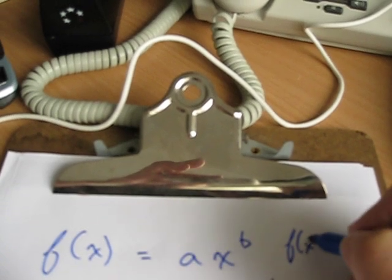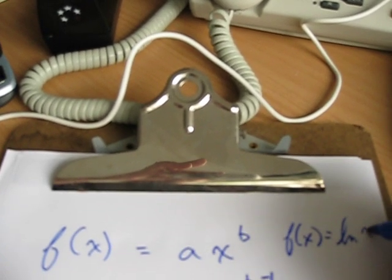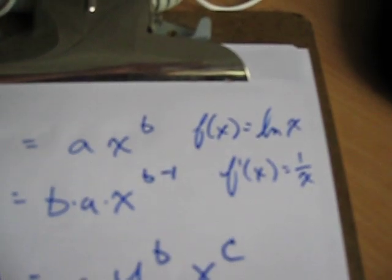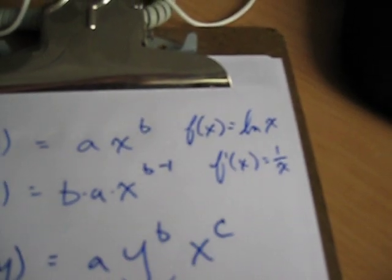One last thing to think about is if the function f of x is equal to the log of x. There it's a little bit different. So what happens? f prime of x is equal to 1 over x. Don't ask why. It's not important why. That's how you take derivatives.